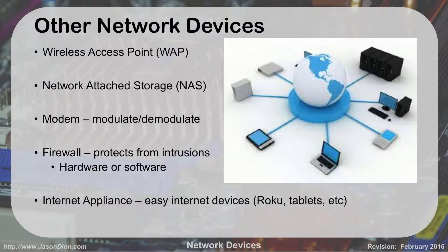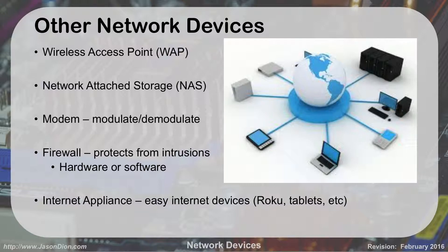Some other network devices you may encounter: a wireless access point creates and captures wireless signals to connect you back into the network. Network attached storage (NAS) is a hard drive with a network port that you can plug into your network to use as a file server. Modems — while analog modems are very old technology, we still use cable modems and fiber modems for internet service. Modem stands for modulate/demodulate; the old analog ones converted ones and zeros into an audible signal transmitted over a phone line. Firewalls protect your network from intrusions and can be hardware-based or software-based.